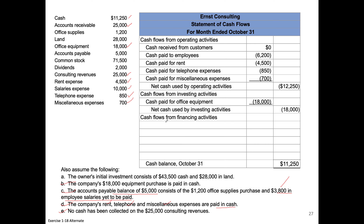Last up: cash flow from financing activities. How much cash did they receive from the owner contributing cash for common stock? The total common stock issued was $71,500, consisting of $43,500 plus $28,000 in land, but only the $43,500 was paid in cash — that's the only inflow from financing. Dividends paid are a cash outflow, so that's negative $2,000 in parentheses. The net cash provided by financing activities is $41,500.